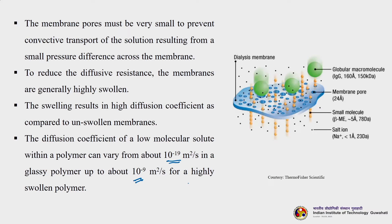This schematic representation of the dialysis process shows globular proteins (large sizes) being retained on the surface of the membrane, whereas small molecules — about 5 angstrom, 78 dalton, 23 dalton — including salt ions and small molecules, are permeating through to the downstream or permeate side.